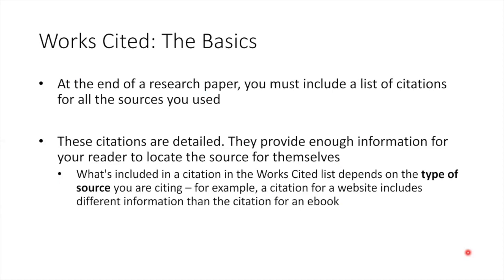Let's move on to the other type of citations — the kind that will appear in the Works Cited list at the end of your research paper. As previously mentioned, these citations are detailed and considerably longer than in-text citations. But here's the tricky part: what's included in a citation in the Works Cited list depends on the type of source you're citing. For example, a citation for a newspaper article includes different elements than the citation for a YouTube video. Today, I'll be demonstrating how to cite three of the most common sources: a book, an article from a database, and a page from a website.